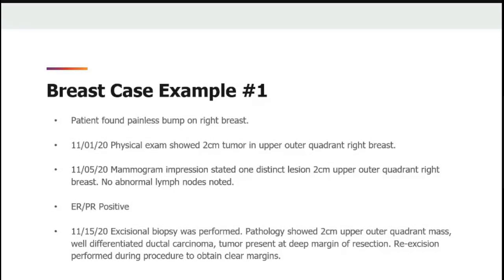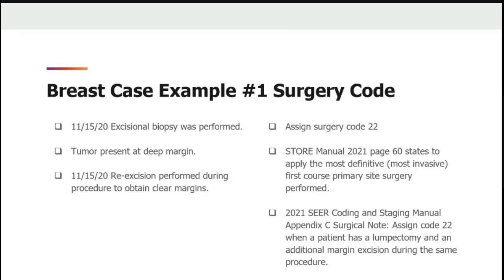Let's walk through a case example. Patient found a painless bump on the right breast. On 11-1-20, physical exam showed a 2 cm tumor in the upper outer quadrant right breast. On 11-5-20, mammogram impression stated one distinct lesion, 2 cm in the upper outer quadrant right breast; no abnormal lymph nodes were noted. The patient was ER-PR positive. On 11-15-20, an excisional biopsy was performed. Pathology showed a 2 cm upper outer quadrant mass — well differentiated ductal carcinoma — with tumor present at the margin of resection. A re-excision was performed during the procedure to obtain clear margins, which was achieved.